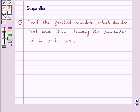Hello and welcome to the session. In this session we discuss the following question which says find the greatest number which divides 401 and 1085 leaving the remainder 5 in each case.